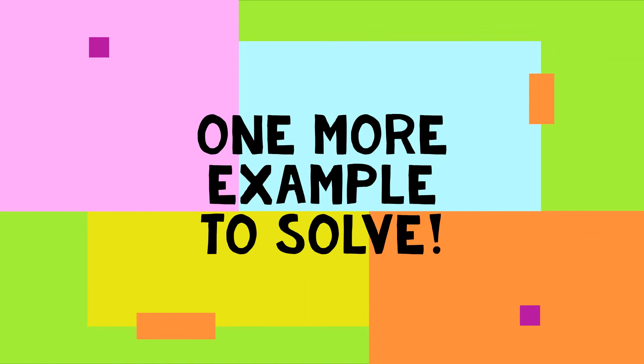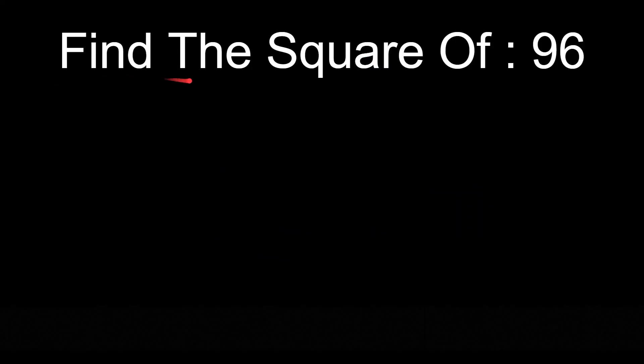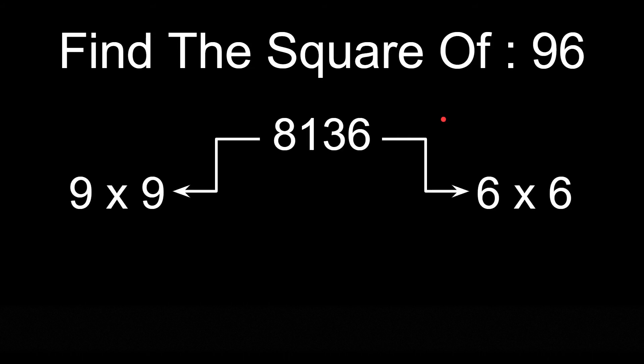One more example to solve. This one asks us to find the square of 96. So we will write the square of 9, that is 81, and the square of 6, that is 36. Then we will add 9 into 6 into 2 to it from the 10th place.